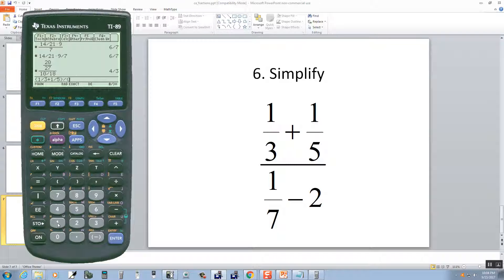divided by beginning parentheses, 1 divided by 7, minus 2, and then closing parentheses. And then I'll push enter. And that gives us negative 56 over 195.